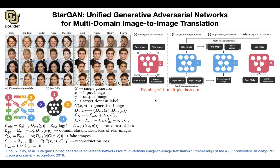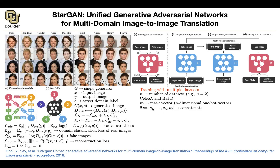For multiple datasets — like CelebA and RAFD — you're going to have a mask vector, which is a one-hot vector. If you are in the CelebA dataset, you have a one there and zero for the other. You concatenate it as additional input to your target domain label. N for one dataset could be four, and N for the other could be three. If one dataset has fewer classes, you just assign zero to the remaining entries to keep the same dimension.